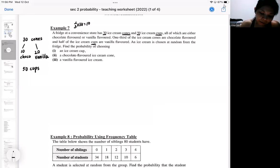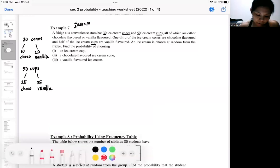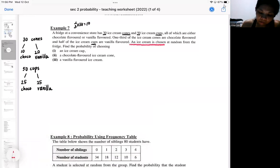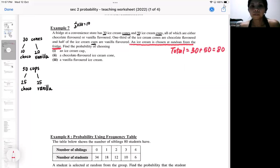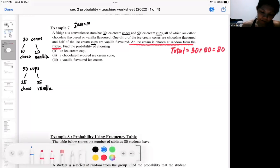Then where else, half of the cups are vanilla. So right now here, the keyword is you're going to be choosing the ice cream from the fridge. You are choosing ice cream from the fridge. That means it could be either cones or cups as long as it's ice cream. So your total choices, your total choices will be 30 plus 50. So 30 plus 50. Then from here, we try to answer.